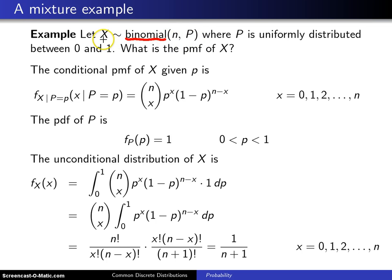The way that is given here in the notation, X has the binomial distribution with a constant parameter n and then a random parameter P, and that's why it's set in uppercase. And furthermore, we're going to assume that P is uniformly distributed between 0 and 1.